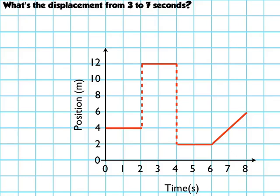This video is going to show you how to find the displacement from a position versus time graph. So the question is this: what is the displacement from 3 to 7 seconds?